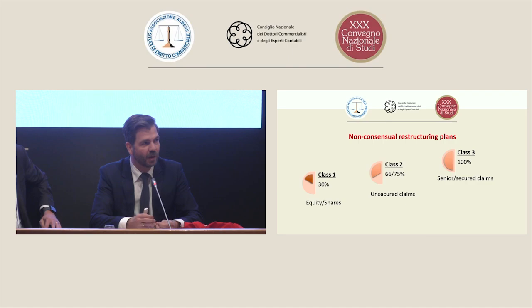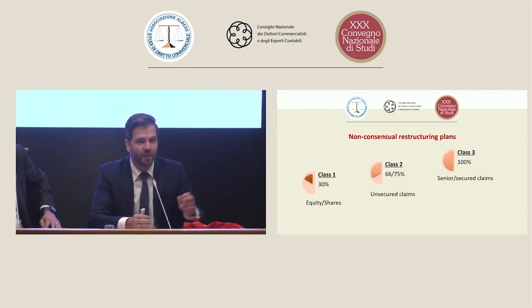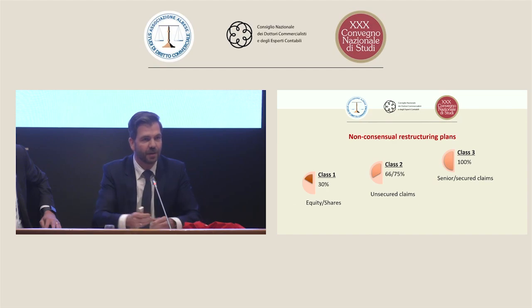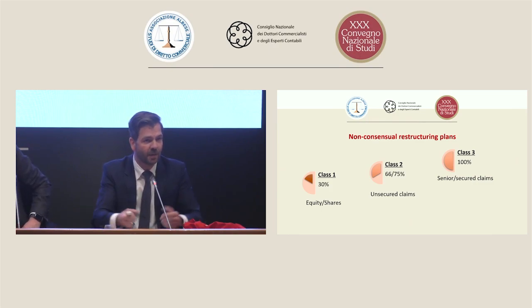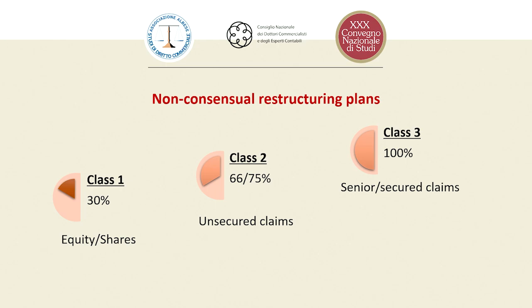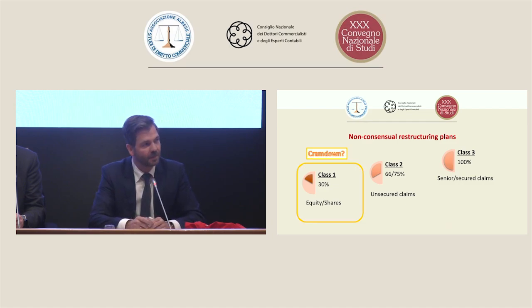Ci sono due modi in cui ciò può arrivare. Uno è quello rappresentato qui: diciamo che i privilegiati accettano il piano, quelli chirografari lo accettano a maggioranza, ma i soci non approvano il piano — probabilmente perché il piano non assicurava loro una prosecuzione dell'attività dell'azienda o comunque non assicurava loro una compensazione sufficiente. Quindi il piano può andare avanti anche se una quota significativa delle parti interessate non è d'accordo, ed è qui che interviene il cram down.